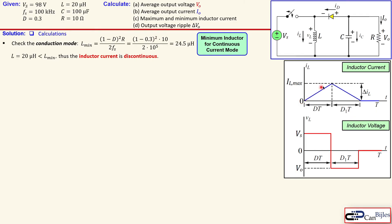In discontinuous current mode, the inductor current waveform goes up linearly, then goes down, and at some point stays at zero. For the inductor voltage, it is Vs during the first part (d·T) when the switch is closed. When the switch opens, there is a part equal to Vo, and then a part which is zero, again due to the discontinuous operation. We can use volt-second balance for the inductor using this graph shown in red.